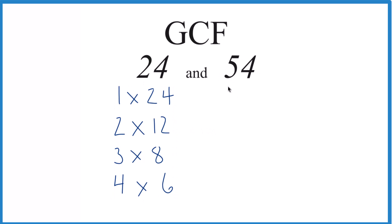For 54, let's see, we'd have 1 times 54, 2 times 27, that would equal 54. Turns out that 3 times 18, that gives us 54, and 6 times 9—that's 54 as well.